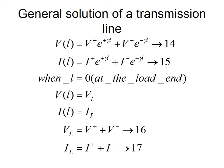Equations 14 and 15 give the general equations for voltage and current at any point on the transmission line. The general solution requires finding V⁺, V⁻, I⁺, and I⁻ — four unknowns requiring four equations. The first two equations are generated by considering voltage and current at the load end, where L = 0. Here V(0) becomes VL and I(0) becomes IL, so equations 14 and 15 simplify: VL = V⁺ + V⁻ and IL = I⁺ + I⁻ (with appropriate signs).